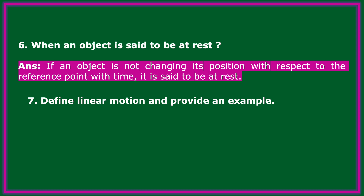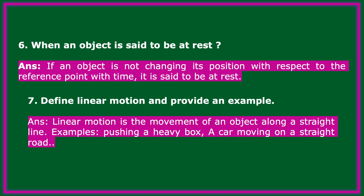Define linear motion and provide an example. Linear motion is the movement of an object along a straight line. Examples include pushing a heavy box and a car moving on a straight road.